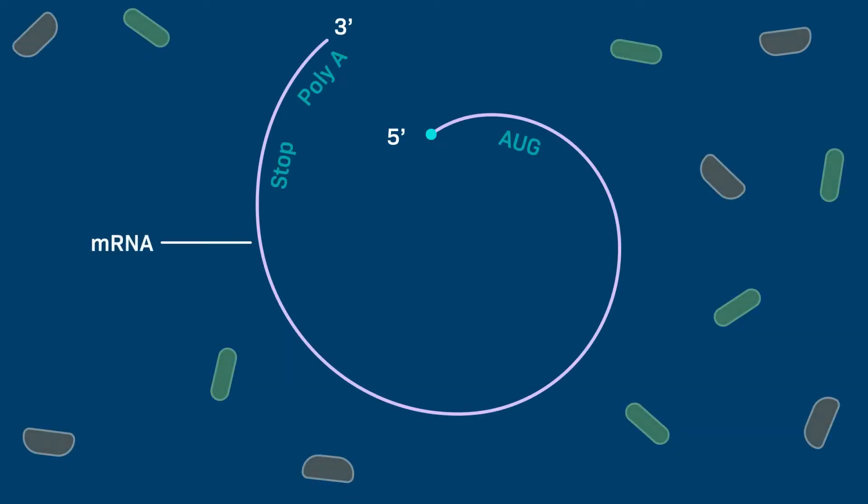A messenger RNA, or mRNA, molecule includes an AUG start codon near its 5' end and a stop codon near its 3' end.